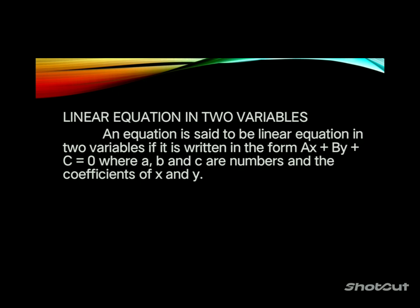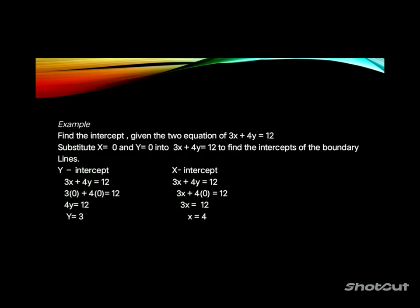Linear equation in two variables: an equation is said to be a linear equation in two variables if it is written in the form ax plus by plus c equals zero, where a, b, and c are numbers and are the coefficients of x and y. Example: find the intercepts given 3x plus 4y equals 12.